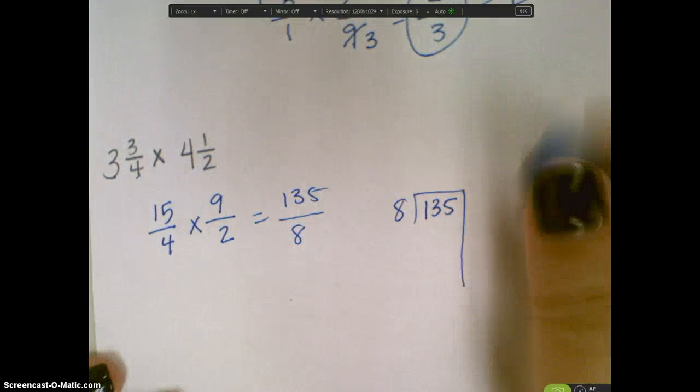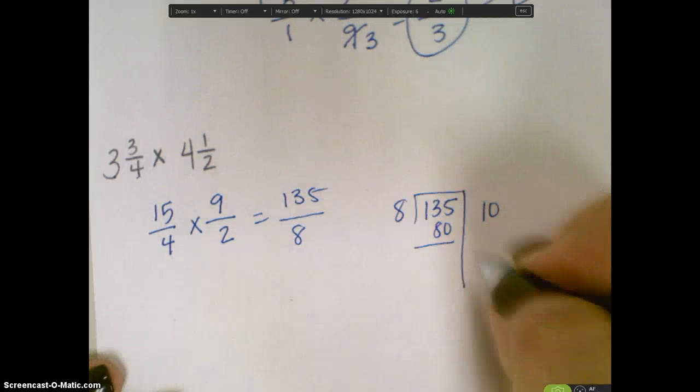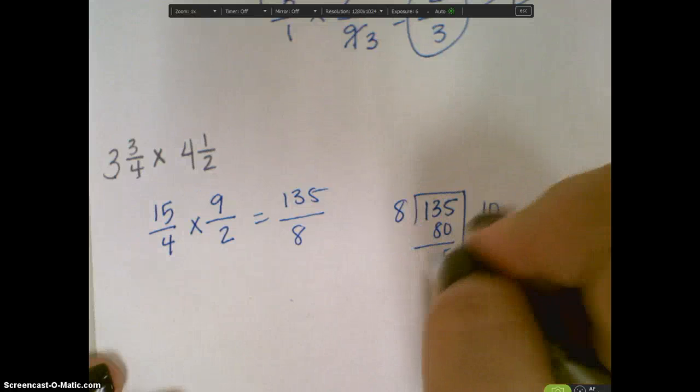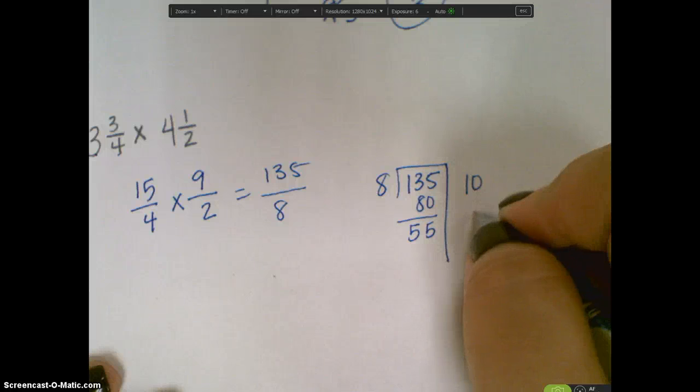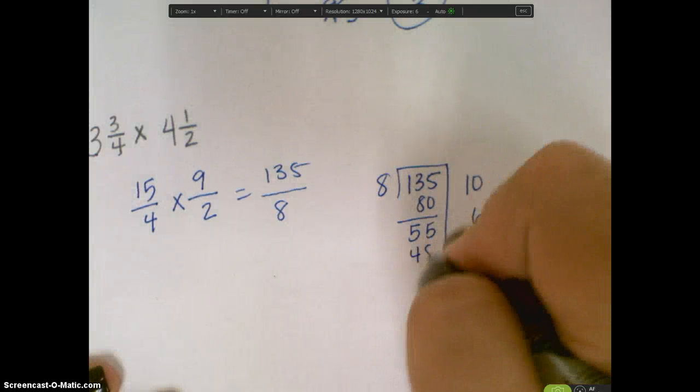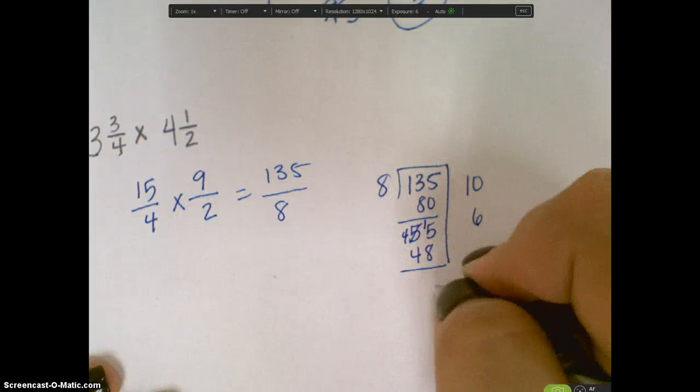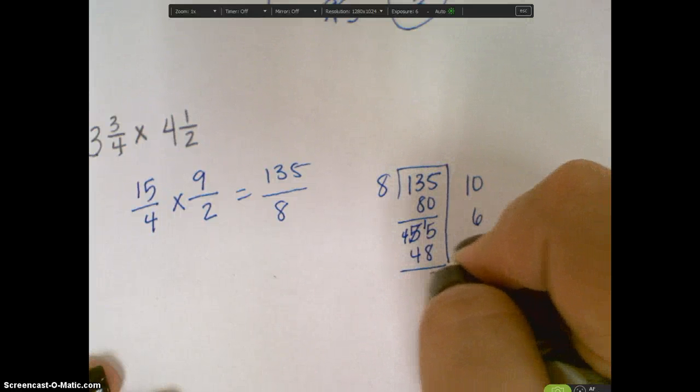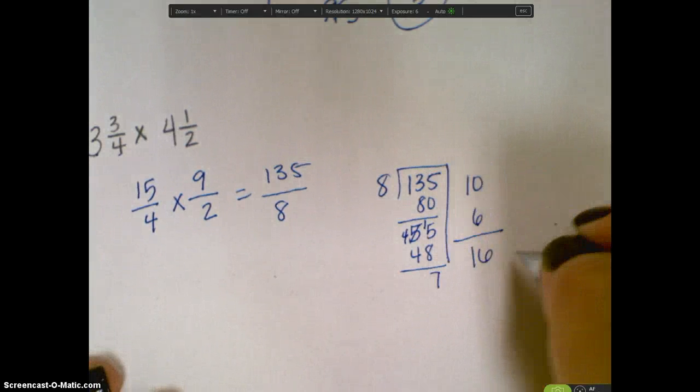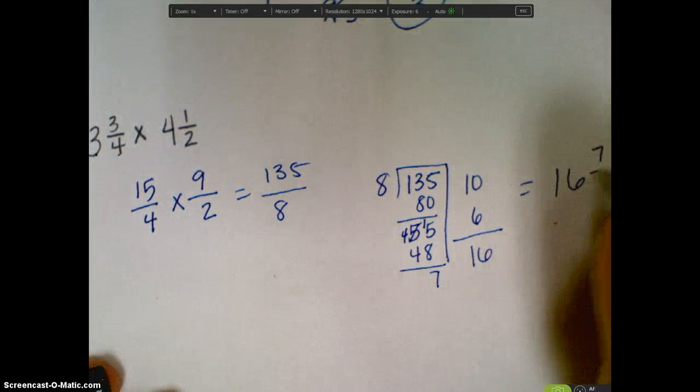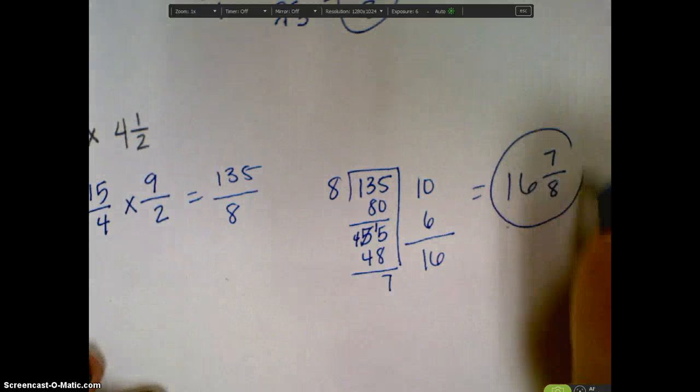Okay, I can say that I know 8 times, what are we going to start with, 10 is 80. And then when I subtract I'm going to get 55. I'm going to do 8 times 6 is 48. When I subtract, 15 minus 8, I should get 7. Okay, so now I have 16, and my numerator is going to be 7, my denominator will stay the same as 8, so my answer would be 16 and 7 eighths.